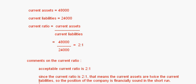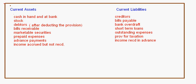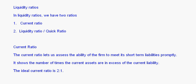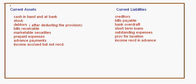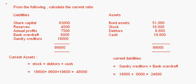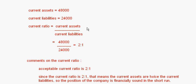Remember the formula for current ratio: current assets divided by current liabilities. This is the formula to be applied and the ratio to be found out. This is how you solve questions on the current ratio, and with that I come to the end of the topic on current ratio. Thank you.